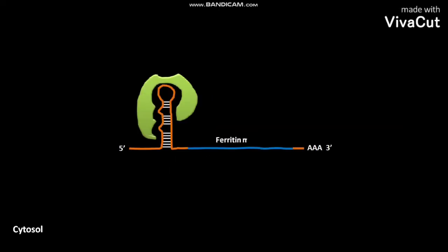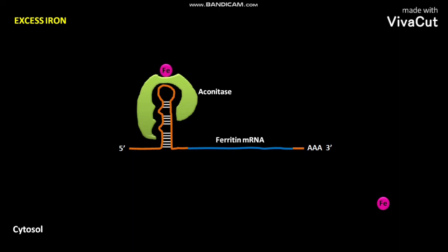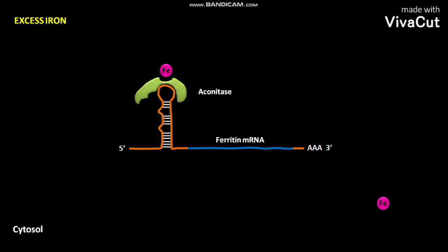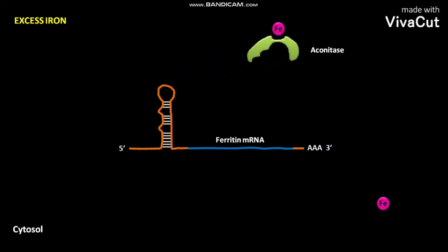This is the ferritin mRNA bound to the cytosolic aconitase. When there are excess iron in the cytosol of a cell, the iron binds to the aconitase. Due to this binding, the aconitase undergoes a conformational change.